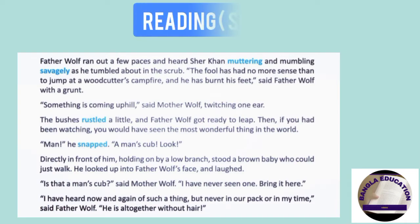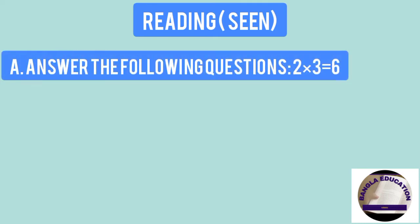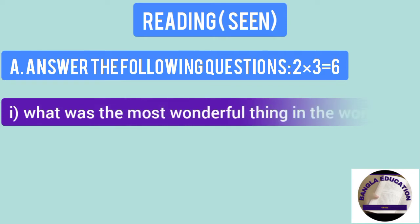First, I have readings in the book. I have given you a paragraph, Father Wolf. So question is A, answer the following questions, 2 into 3 equals to 6 marks. 1. What was the most wonderful thing in the world?